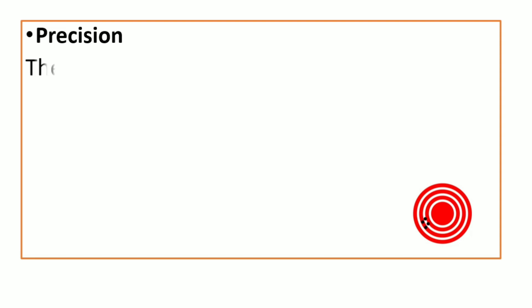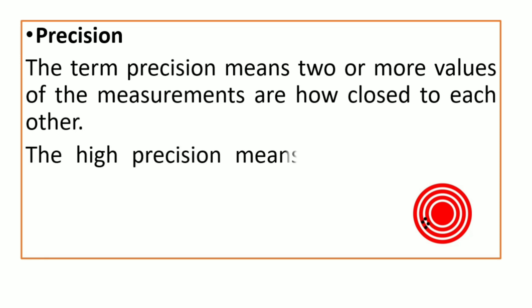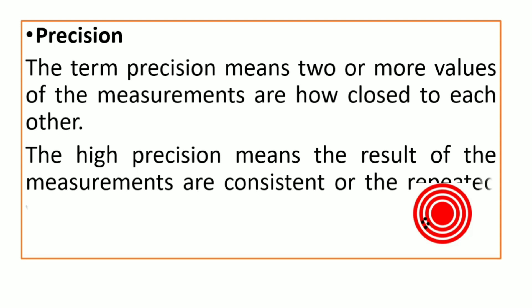Precision. The term precision means two or more values of measurements are how close to each other. The high precision means the result of measurements are consistent or repeated value of readings are obtained.